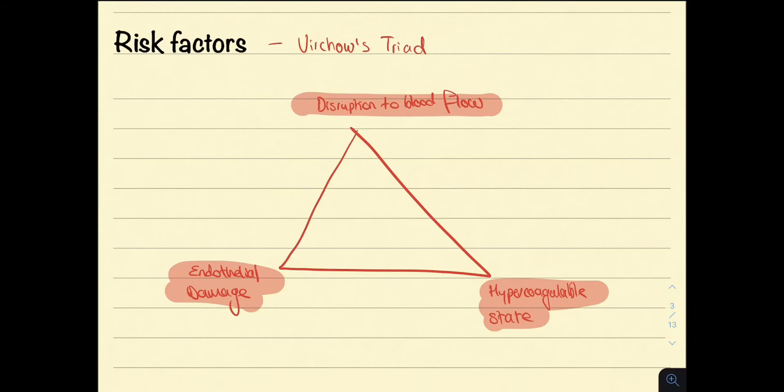You can remember the components of Virchow's triad by using the mnemonic HED, H for hypercoagulable, E for endothelial damage and D for disruption of blood flow.